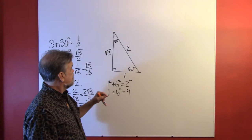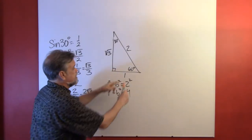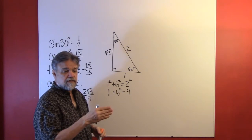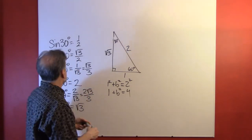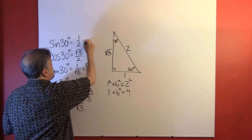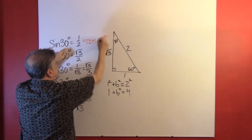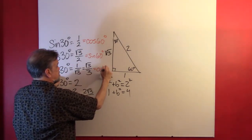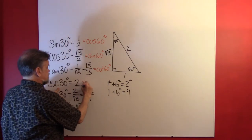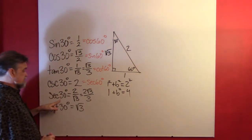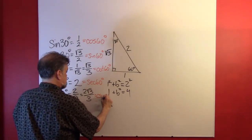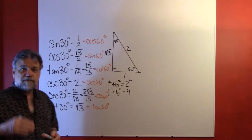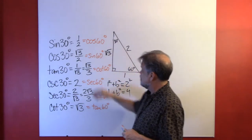Now what about 60 degrees? Well, 60 degrees is the complementary angle to 30 degrees. So the sine of 30 is the same as the cosine of 60, the cosine of 30 is the same as the sine of 60, the tangent of 30 is the same as the cotangent of 60, the cosecant of 30 is the same as the secant of 60, the secant of 30 is the same as the cosecant of 60, and the cotangent of 30 is the same as the tangent of 60.